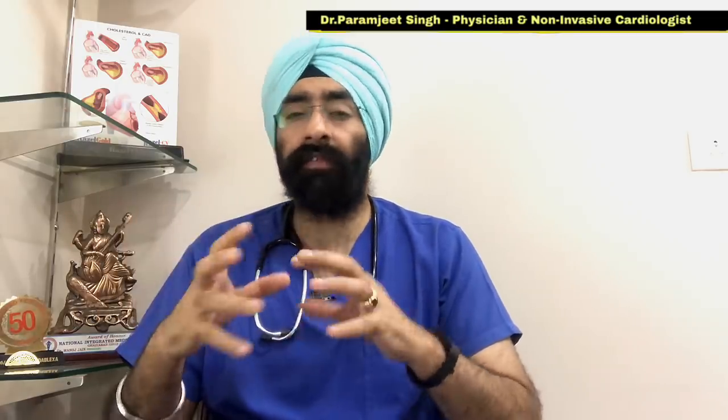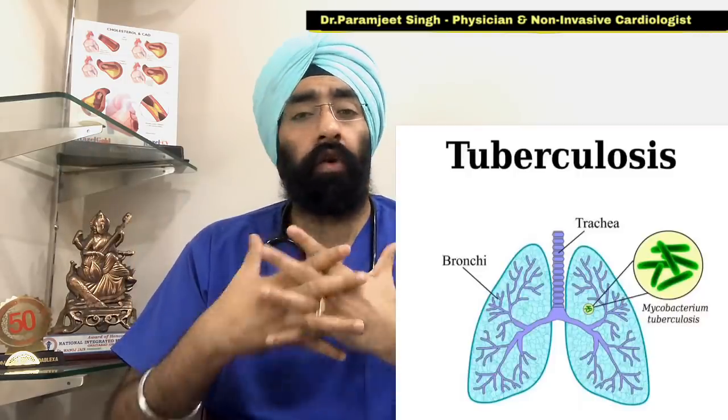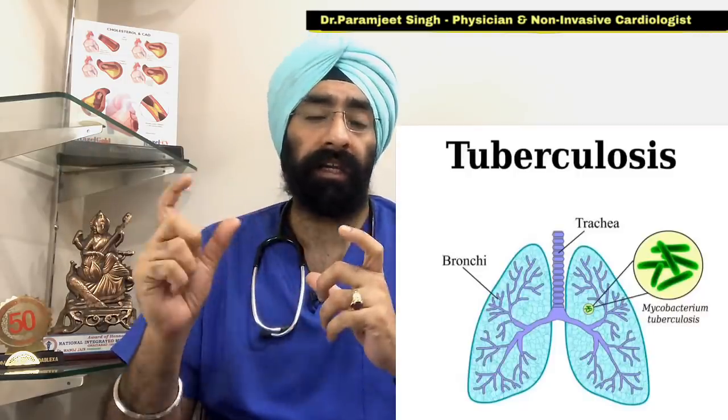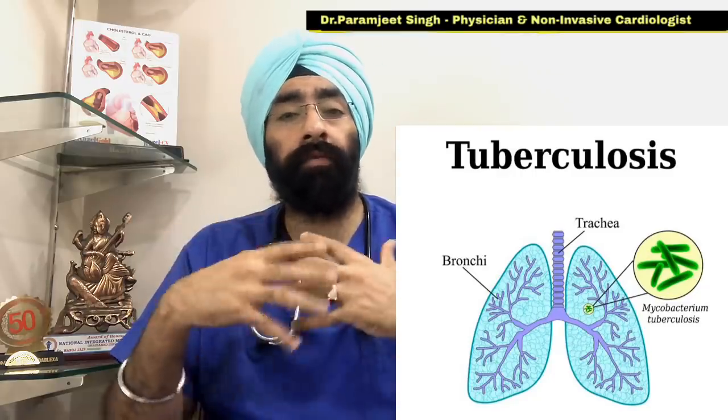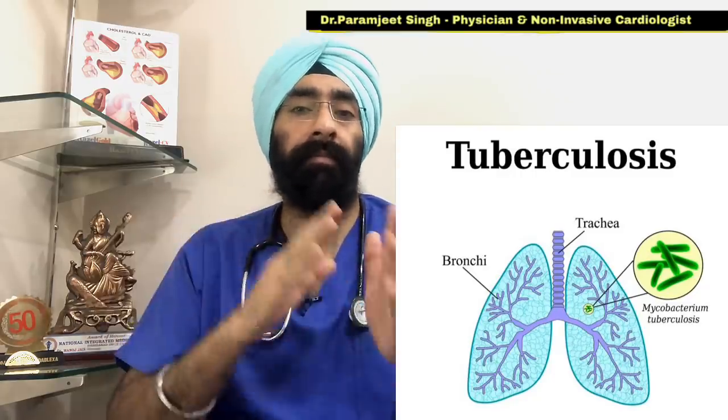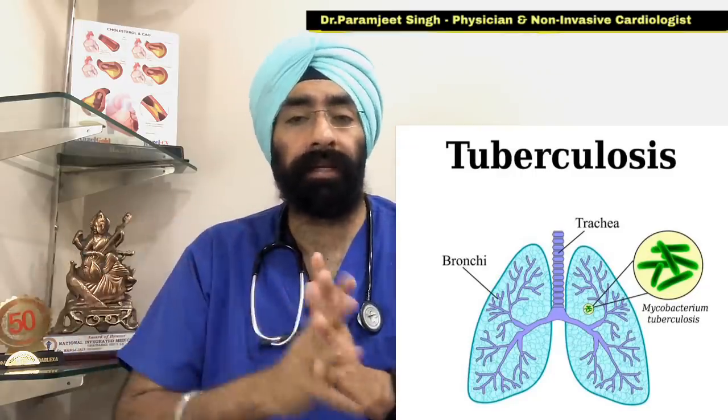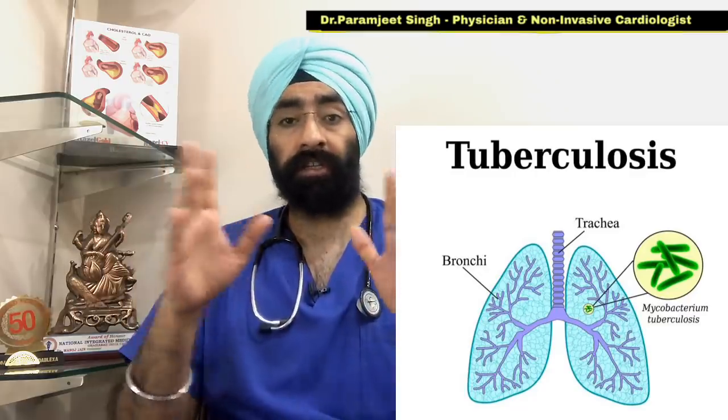Pulmonary tuberculosis, TB, is a contagious bacterial infection that involves your lungs and it can also spread to other organs. This is caused by a bacteria which is called Mycobacterium tuberculosis, M. tuberculosis, and it is very contagious.